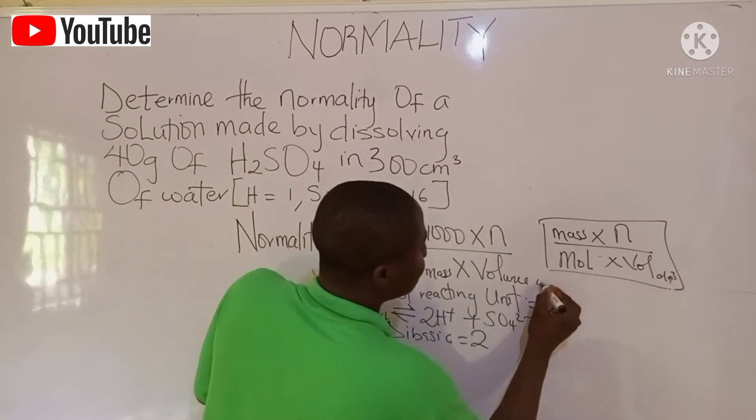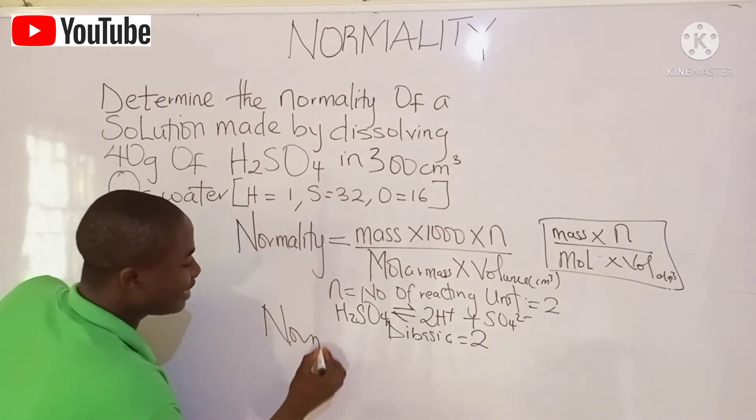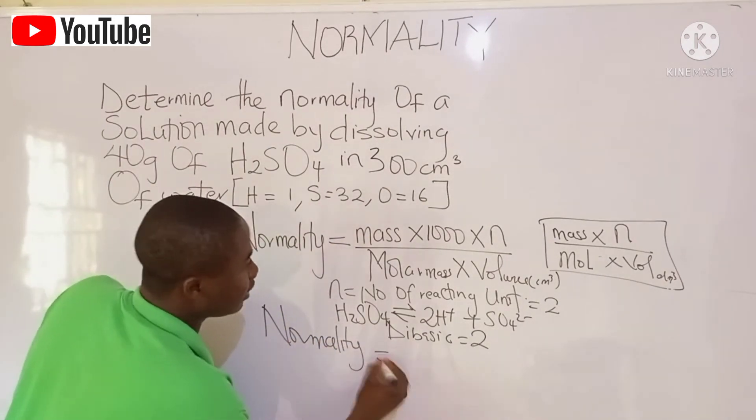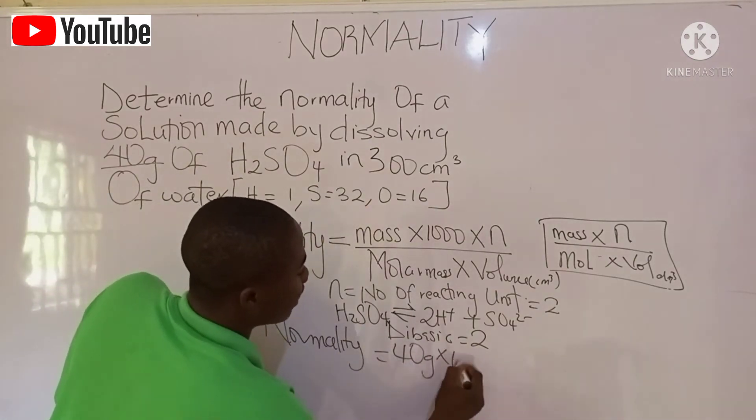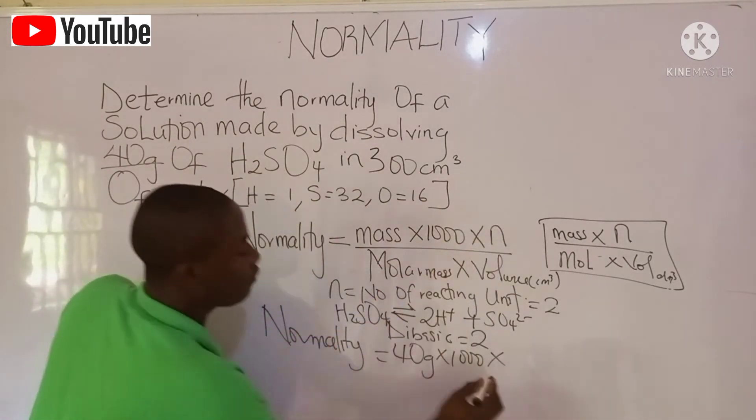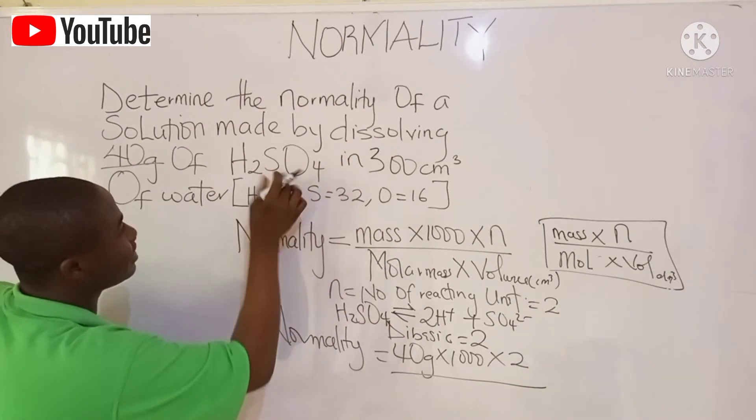But in this case, the volume is in cm³. So basically, we input into our formula. And let's get our answer quickly. The mass is given to be 40 grams. So 40 grams times 1,000 times the number of reacting units, which is 2, over the molar mass of this acid.